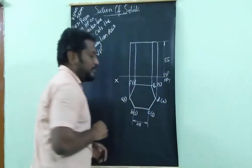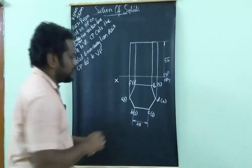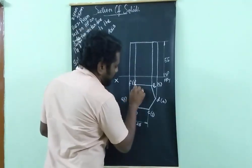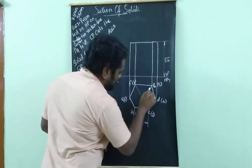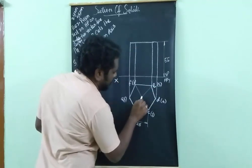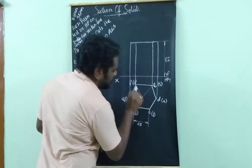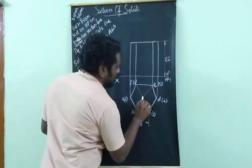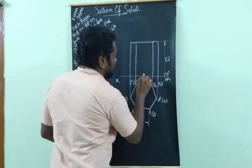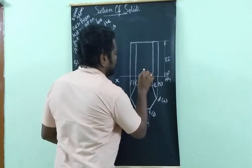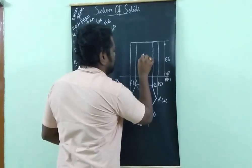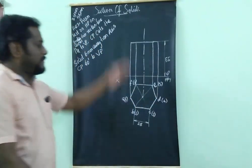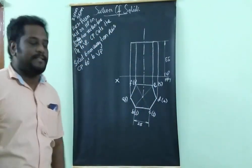To find the center point C, join the opposite faces and you will get a point — this will be your axis point. From this point, make the axis line like this. This is my axis line.